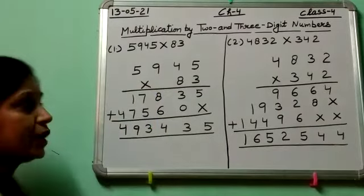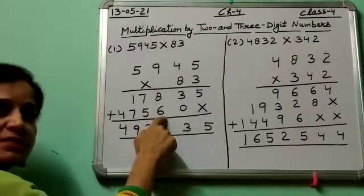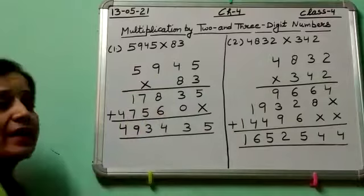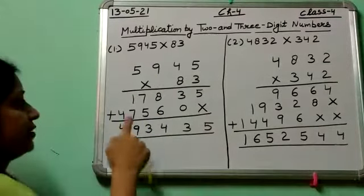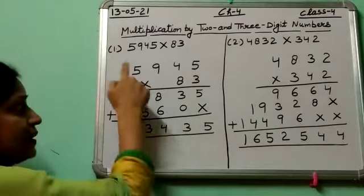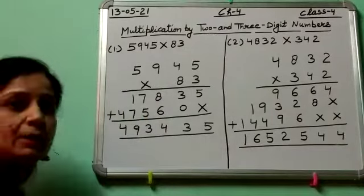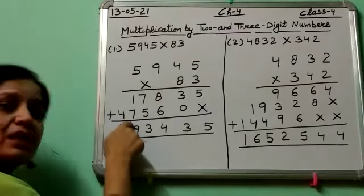8 times 4 is 32, 32 plus 4 is 36, 3 carry. 8 times 9 is 72 and 3 is 75, 7 carry. 8 times 5 is 40 plus 7 is 47.